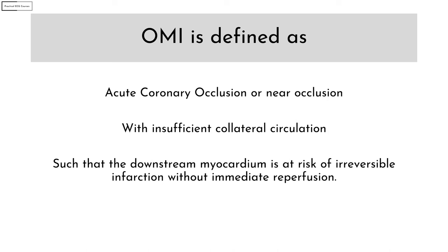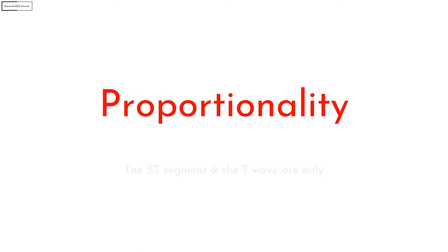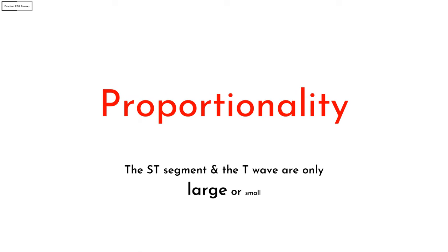The OMI-NOMI paradigm focuses on occlusion — which is what we are actually looking for when we interpret an ECG in a patient with chest pain. It takes away the misconception that ST elevation is what matters. There is no single criterion for OMI and clinical context is an important factor. There are a number of ECG patterns representing OMI, such as Sgarbossa criteria in LBBB, de Winter T-waves, and even an unambiguous STEMI — because it represents a total occlusion.